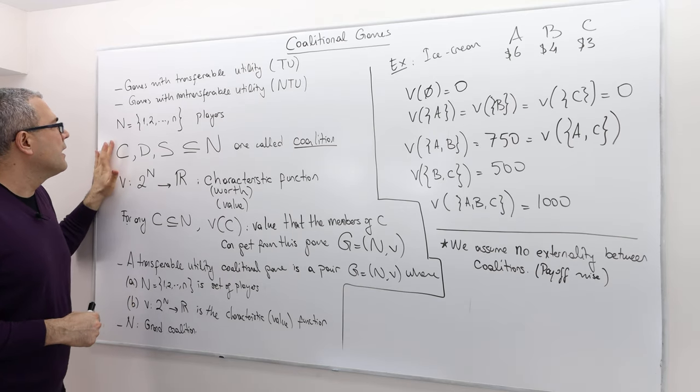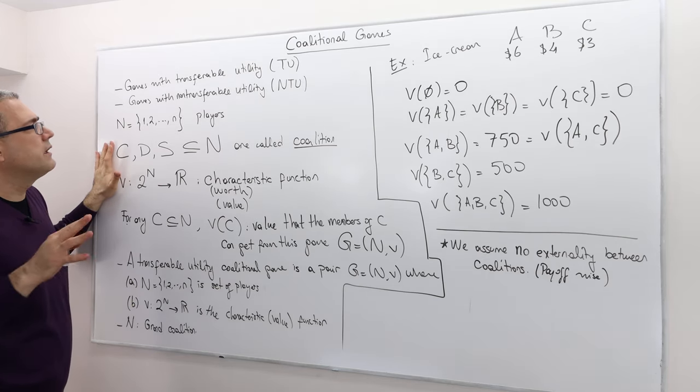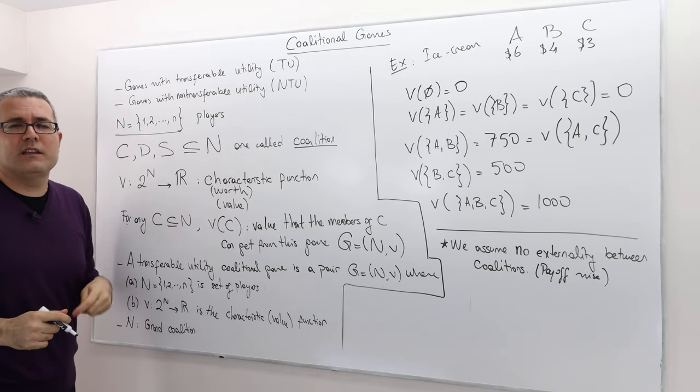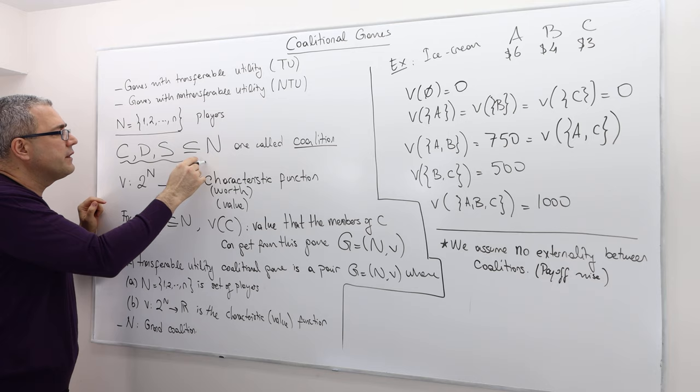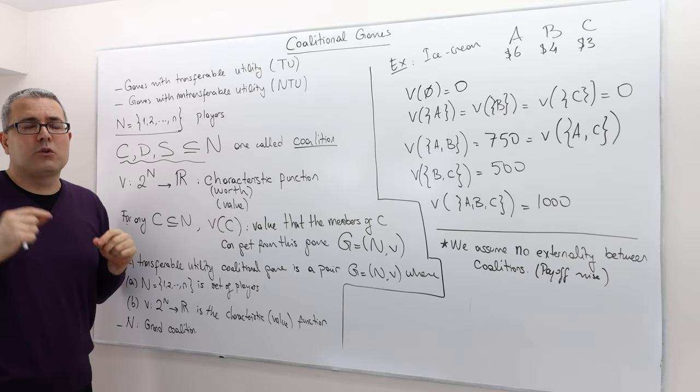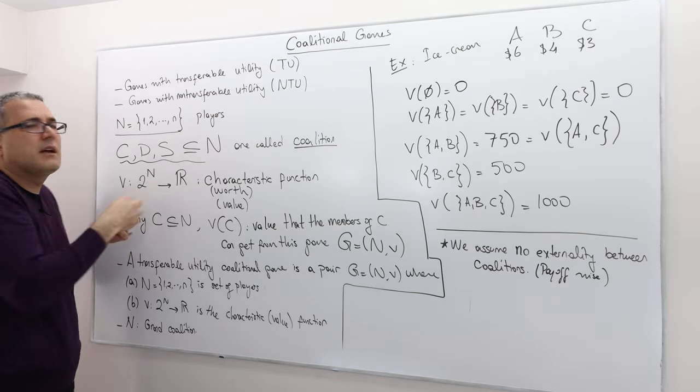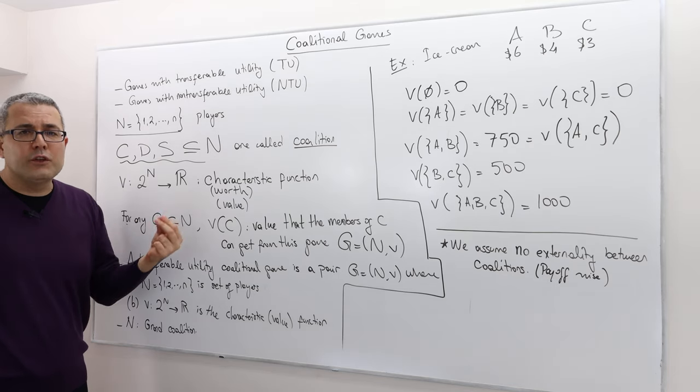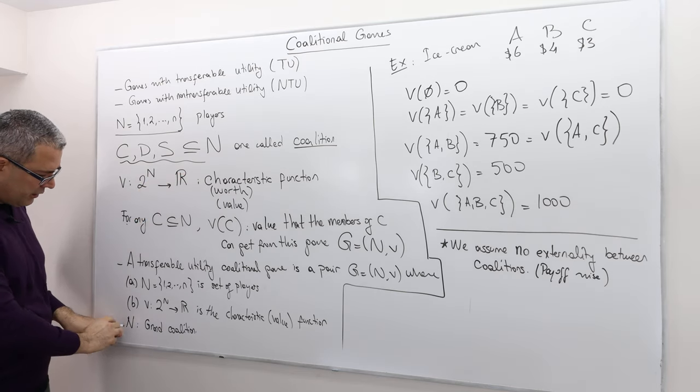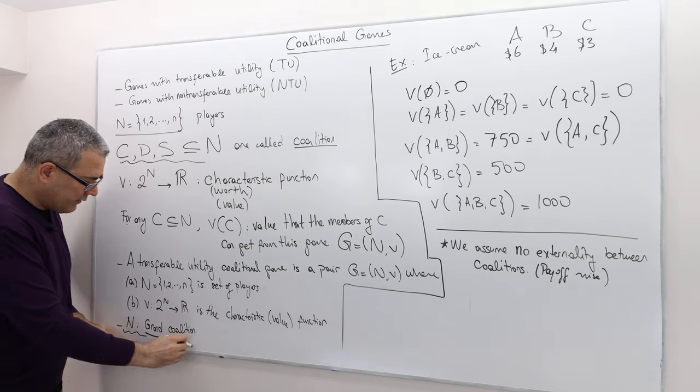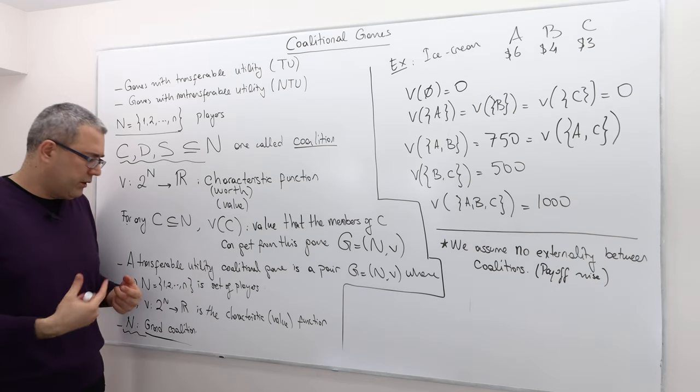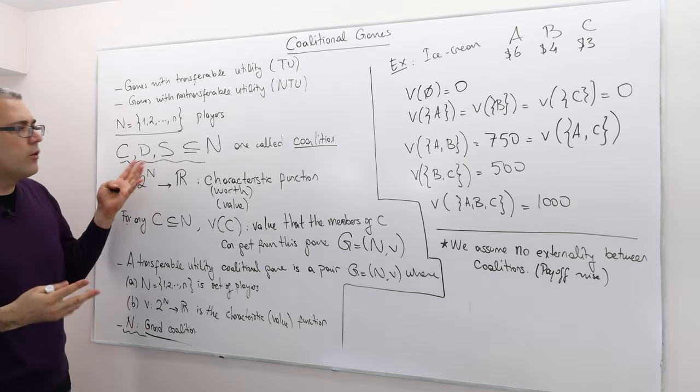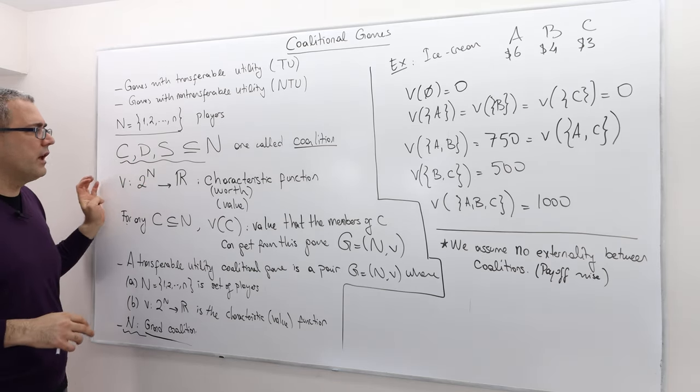In any games, in the coalitional games we have to start with set of players denoted by N. I assume that small n is the number of players. Different than the non-cooperative approach, we are going to talk a lot about coalitions. Coalitions are basically some subset of the set of players. It could be empty, it could be only one individual, it could be two, maybe all of them. If all individuals are in the coalition, the set of players itself, we call it grand coalition. This terminology is important because we're going to use it a lot.